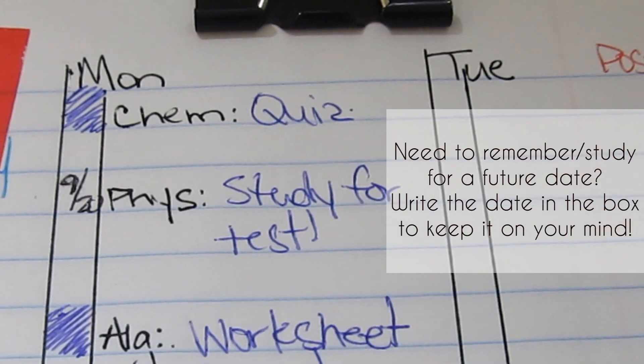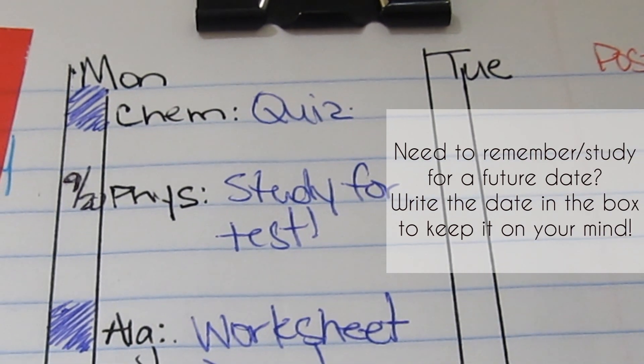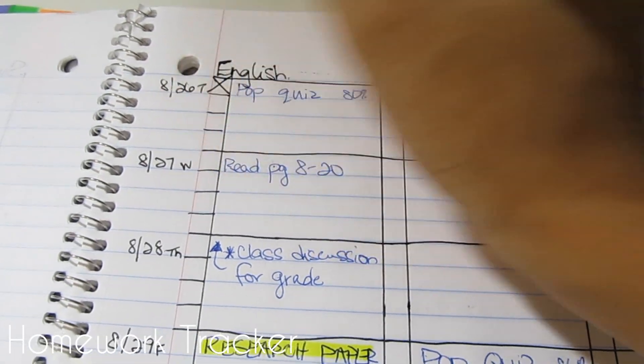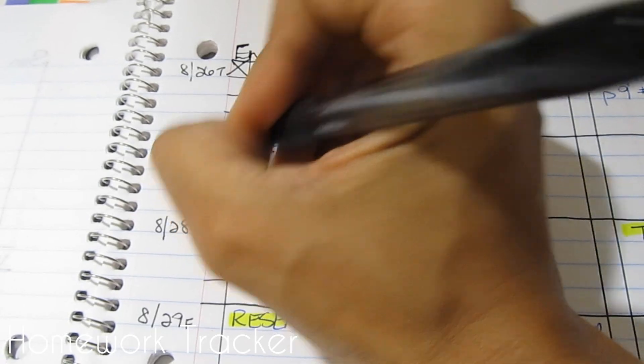If there's something that has a future date that I need to remember, put the date next to it. That reminds me that I need to keep it on my mind.